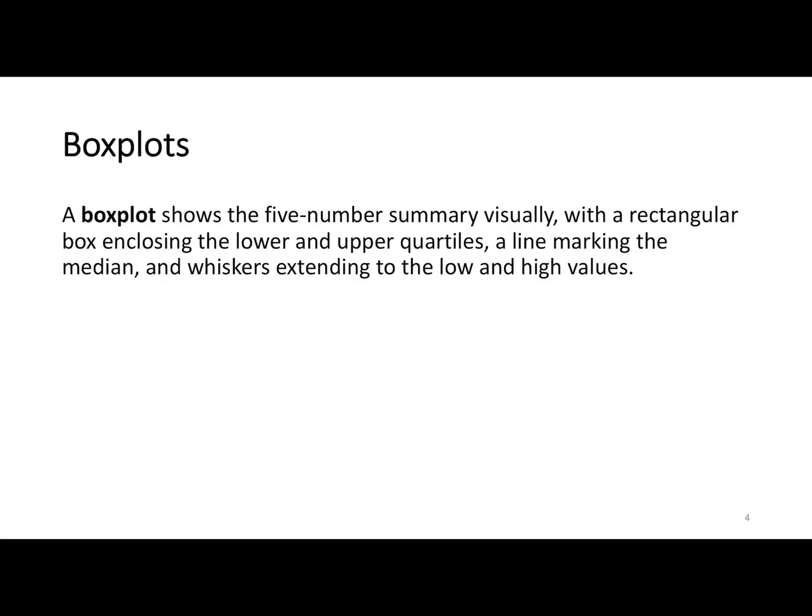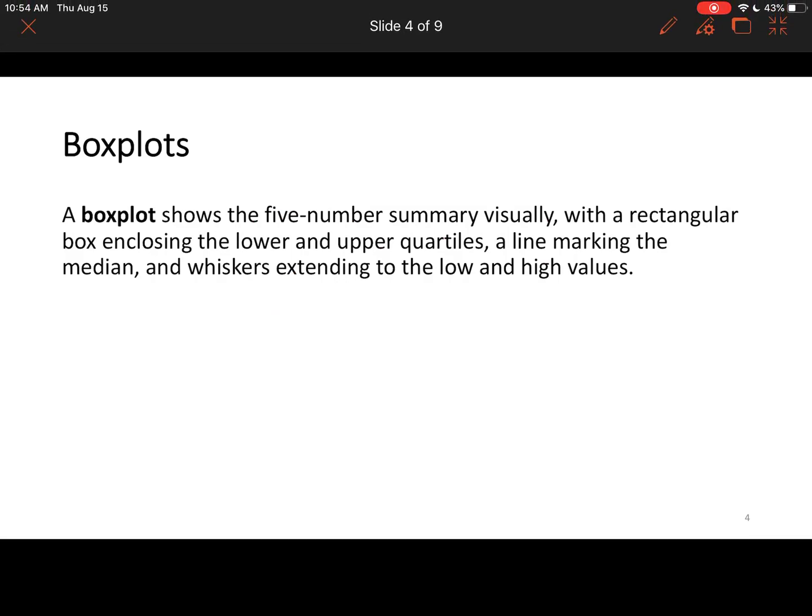And so then what we do, we take the five-number summary, and in most cases, you draw a box plot. So it looks like a rectangle. Some call it a box and whisker plot. Some call it a box plot. But it looks like that. This is your low. This is Q1. This is your median or Q2, Q3. And then this is your highest value on the right. So they typically all look the same.